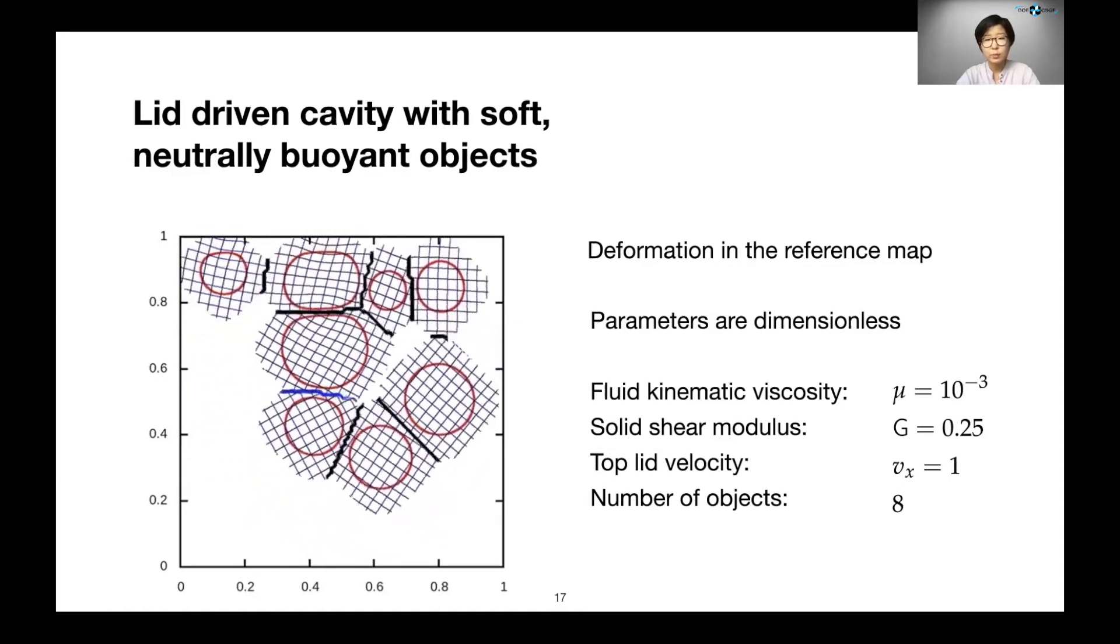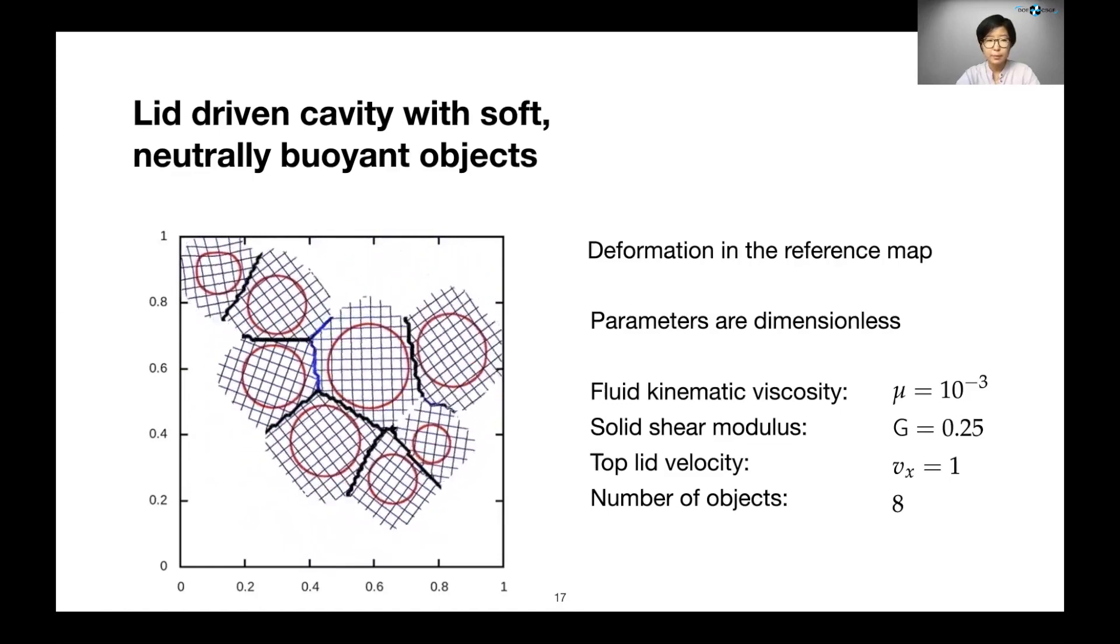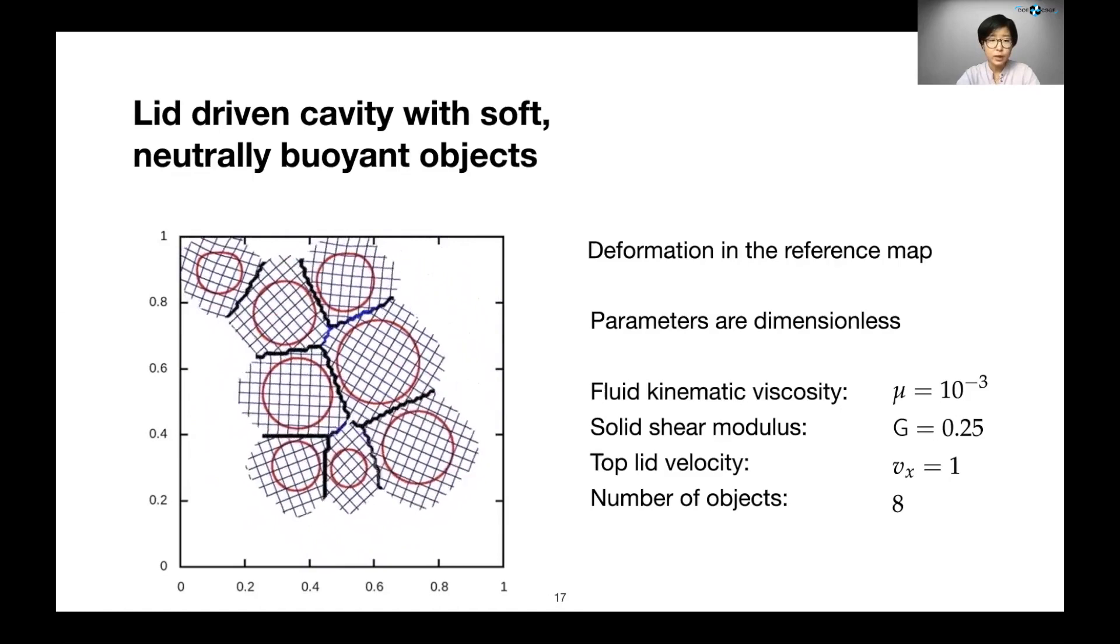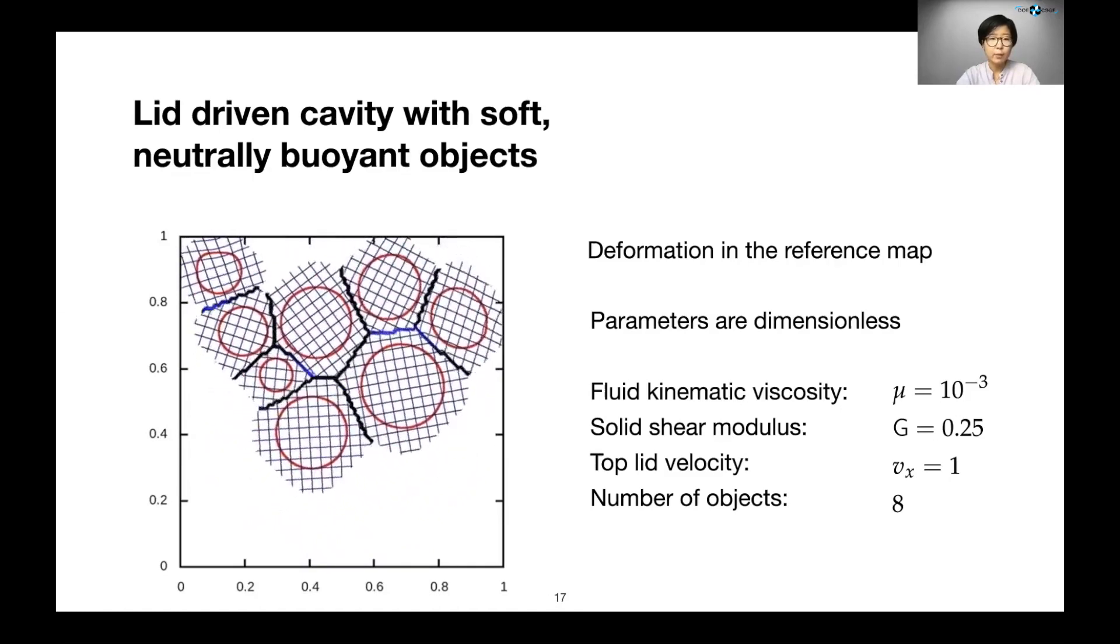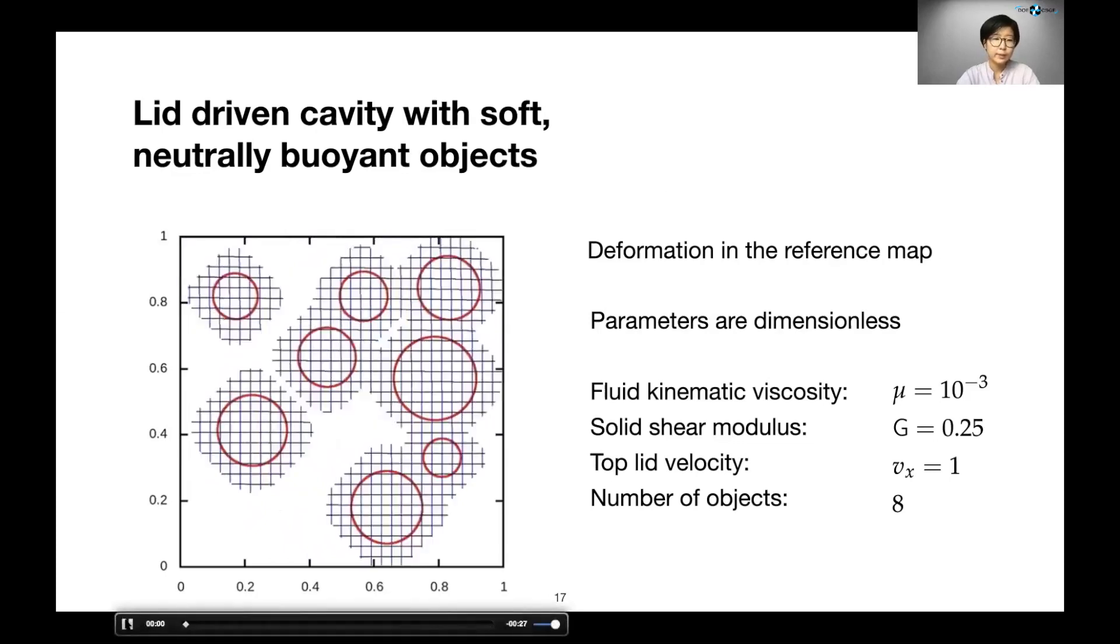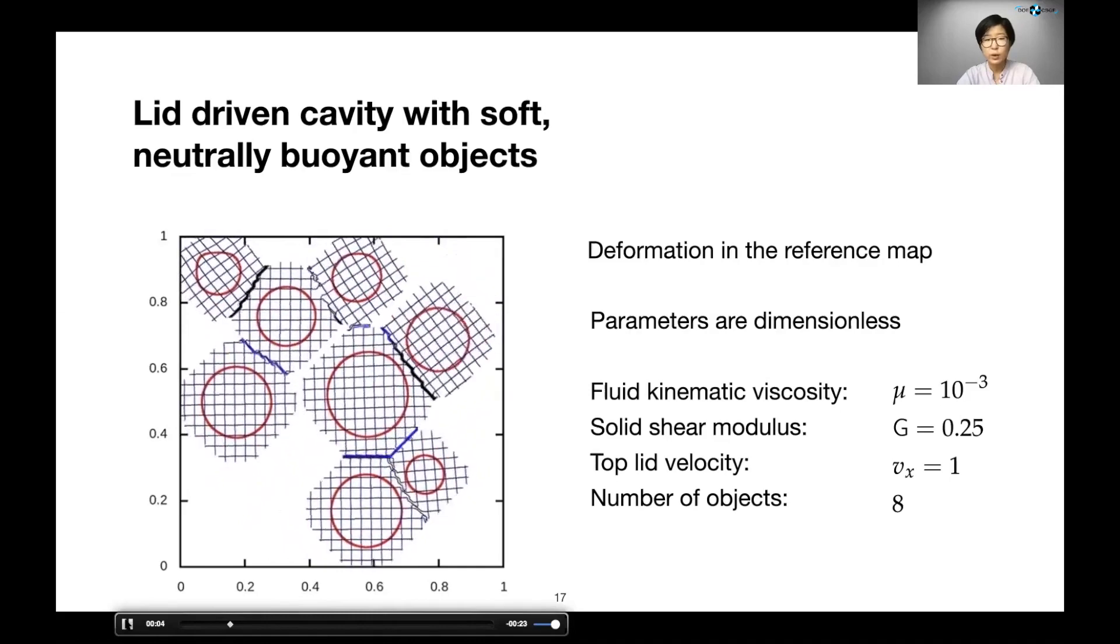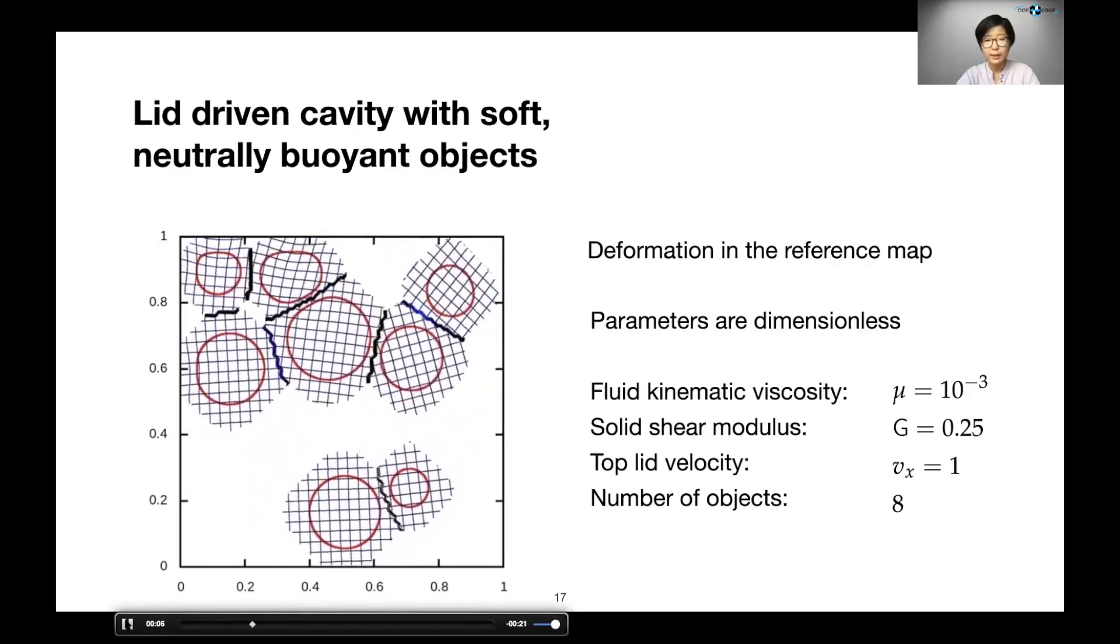We can see that our extrapolation technique creates regular reference map field values, even after the solid bodies have been greatly deformed and affected by the flow. We can also see that the extrapolated values only exist in a small extent around the solid bodies that they belong to.